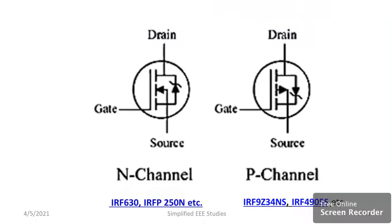Let me show you the diagram. For n-channel MOSFET, you can see the direction of the arrow — it will be towards the gate. For p-channel MOSFET, the direction will be away from the gate. That's the key distinction in their symbols.